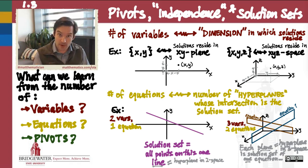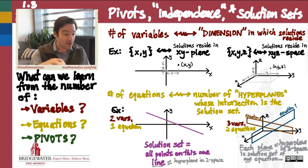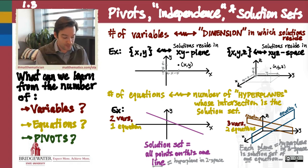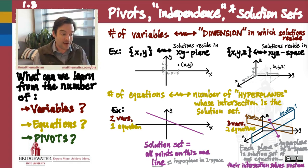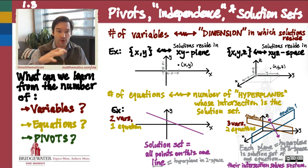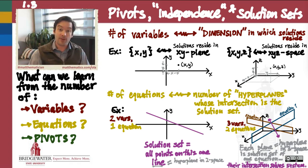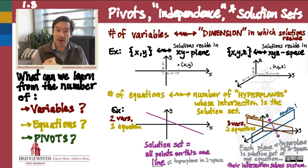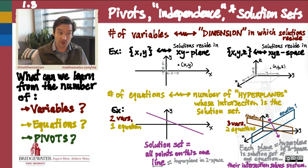So one possibility for what my solution set will look like, depending on how those planes are arranged inside of three-space, is that if those two planes happen to intersect one another — as they do in my picture here — then the intersection of those two planes is going to determine for me a line, and that line is going to be the solution set of the system. This is the theoretical framework we have so far: the number of variables tells me the dimension of the space in which my solution set lives, and the number of equations tells me the number of hyperplanes I'm going to intersect to form the solution set.